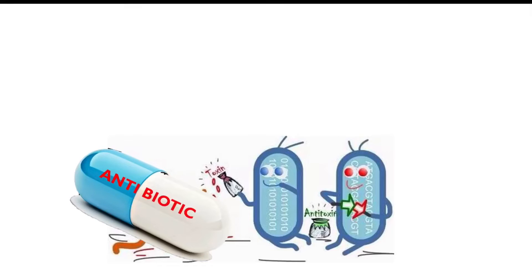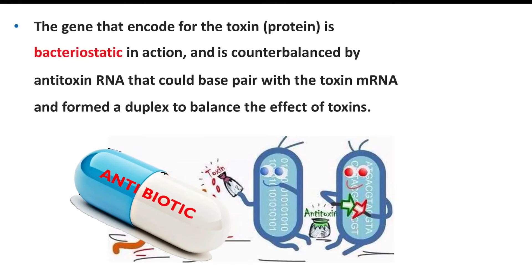How does this balance occur? This process occurs by a gene that encodes for a toxin — which is a protein, bacteriostatic in action — and is counterbalanced by antitoxin RNA that can base-pair with the toxin mRNA and form a duplex to balance the effect of toxins. So antitoxin RNA will interrupt the action of the toxin gene, and in this way the cell will protect itself within the biofilm.